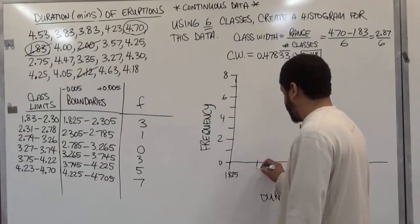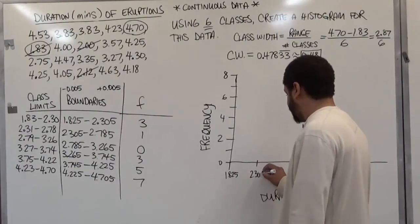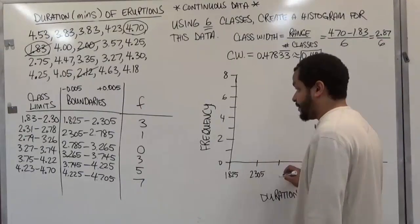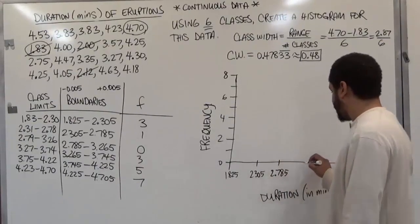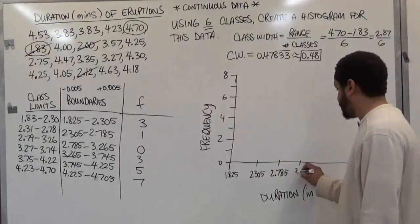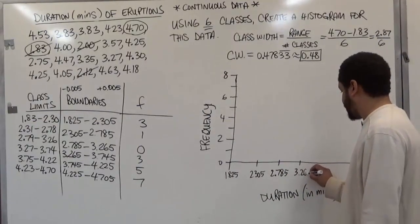The next point being 2.305. The next point, 2.785. The following point is going to be 3.265.